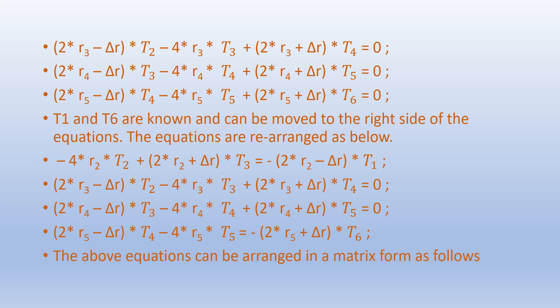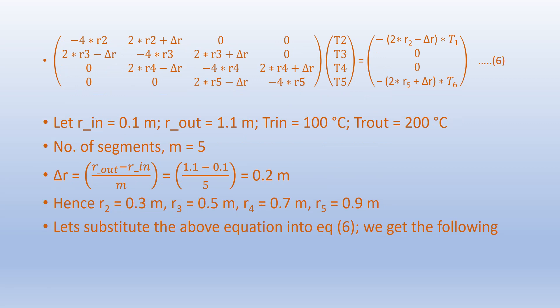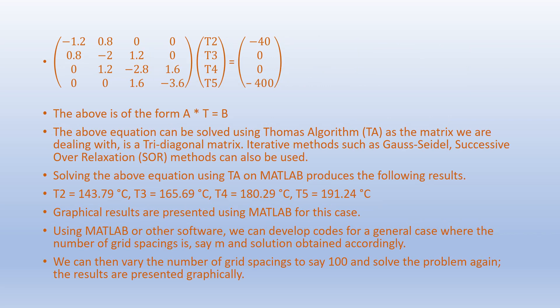The equations can be arranged in matrix form. Here R_in = 0.1 m, R_out = 1.1 m, T_Rin = 100°C, and T_Rout = 200°C. The number of segments m = 5, so ΔR = (1.1 - 0.1)/5 = 0.2 m. Hence R₂ = 0.3 m, R₃ = 0.5 m, R₄ = 0.7 m, and R₅ = 0.9 m. Substituting these values into equation 6 gives the matrix form.